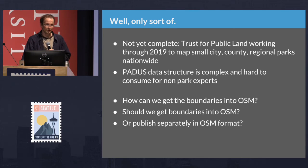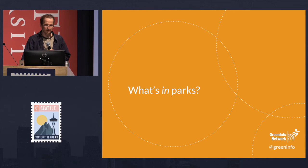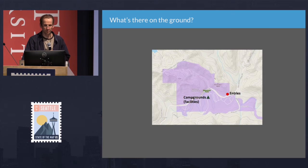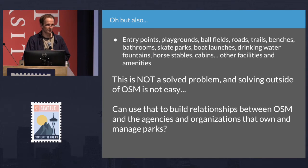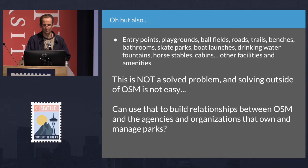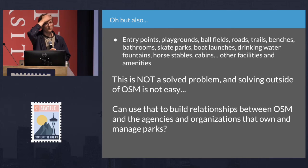That only gets us the boundaries. What's in a park is actually what people use and visit and can see and verify, and I think that's really where OpenStreetMap can add so much to public lands mapping.